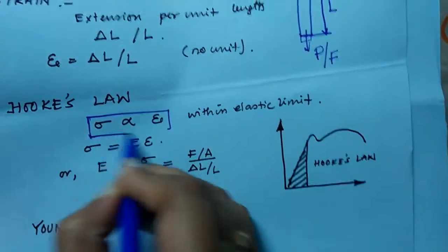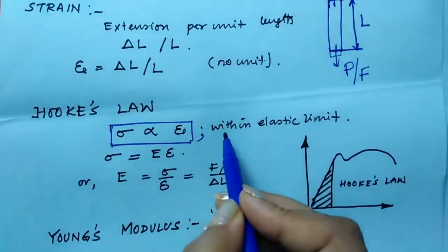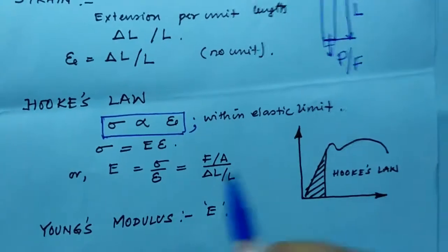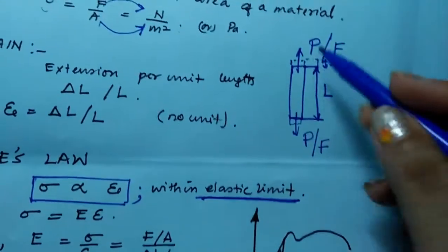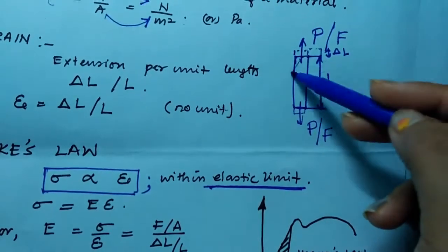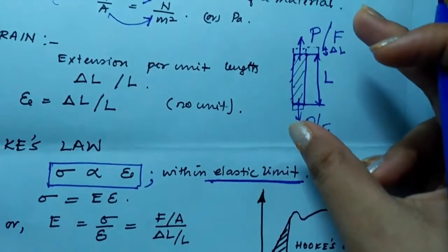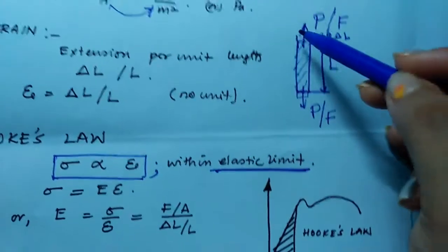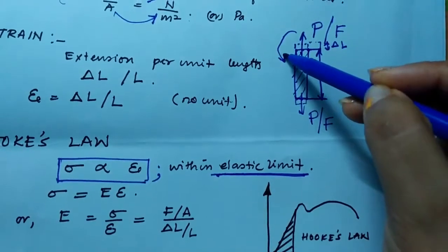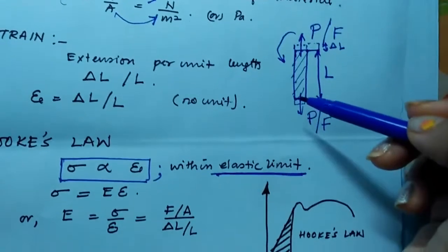Now let's focus on Hooke's Law. Hooke's Law states that stress is directly proportional to strain, and this holds within the elastic limit. What do you mean by elastic limit? Suppose a tensile load is applied on a bar — after we release that load, when the material has the capability to restore back to its original position, that is the property of elasticity.